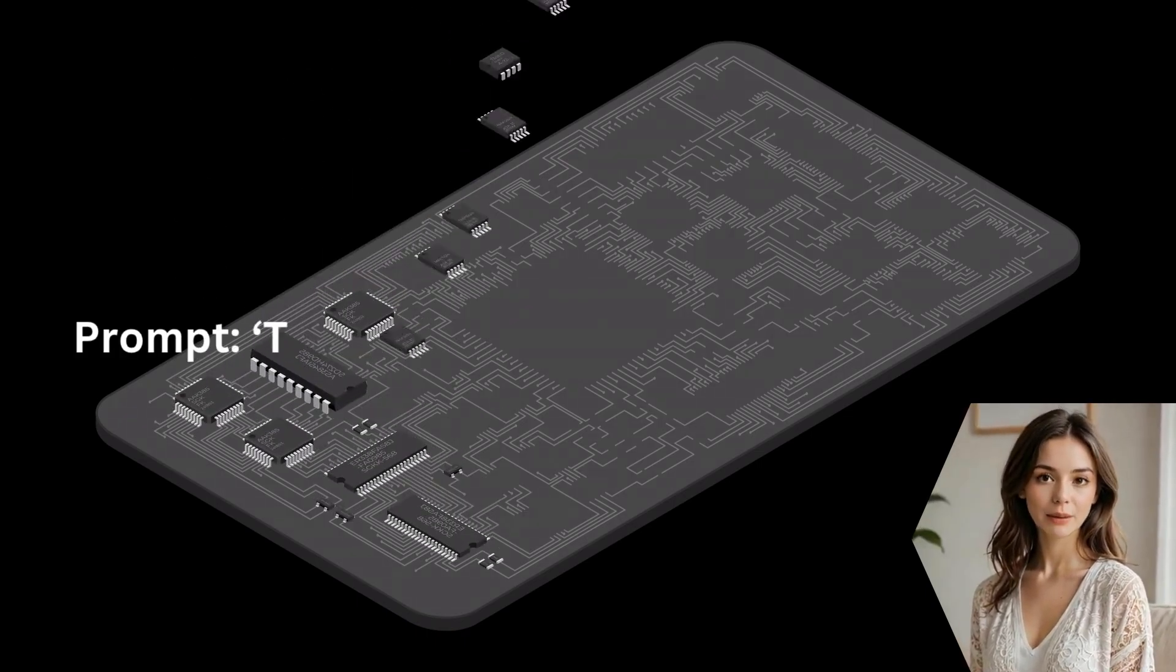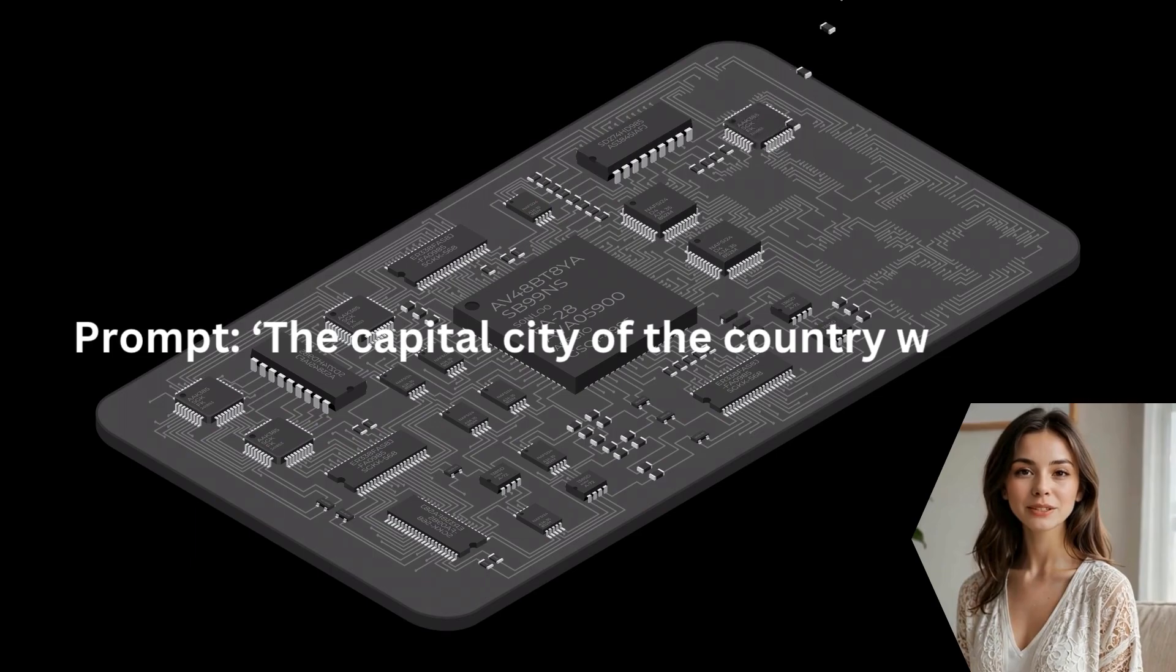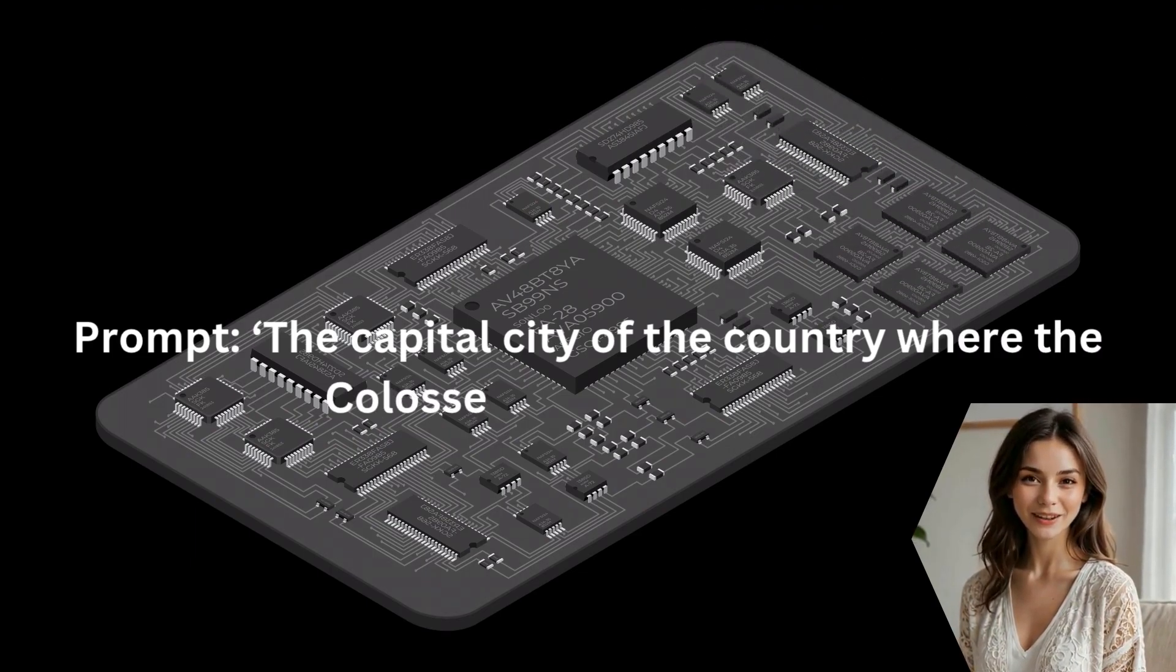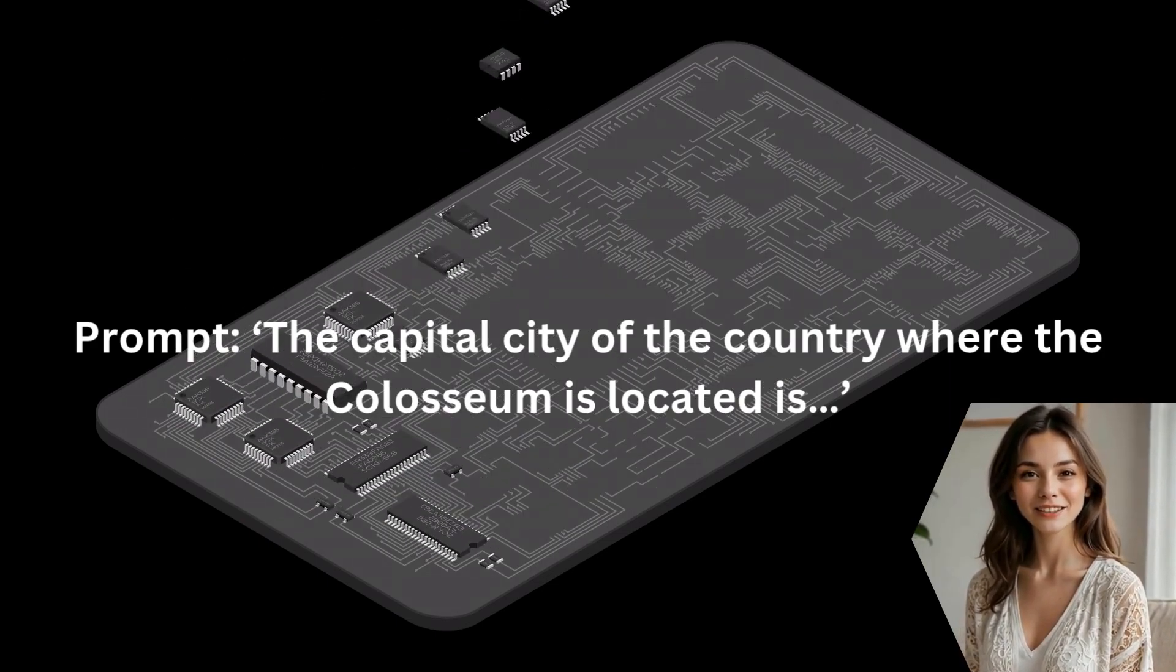Let's try it out with an example. I ran the prompt. The capital city of the country where the Colosseum is located is... The model, Gemma, correctly answers Rome. But how did it connect the Colosseum to Rome?